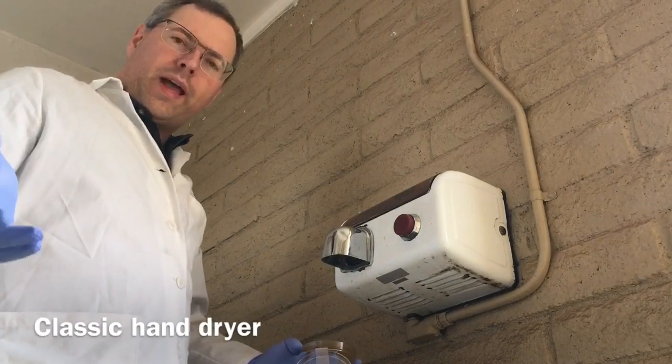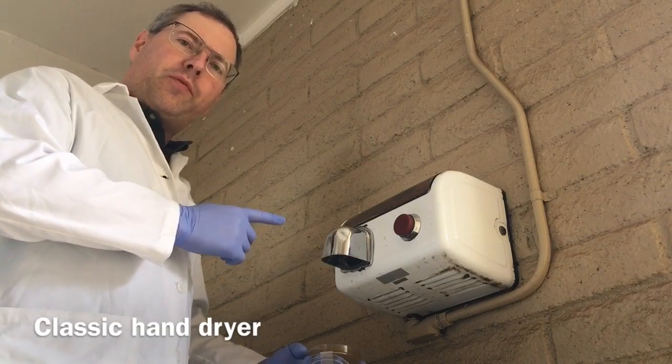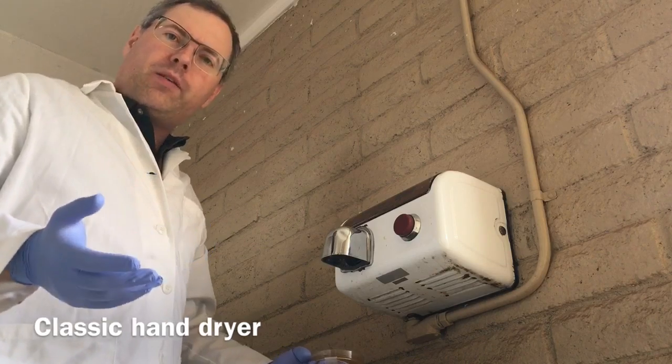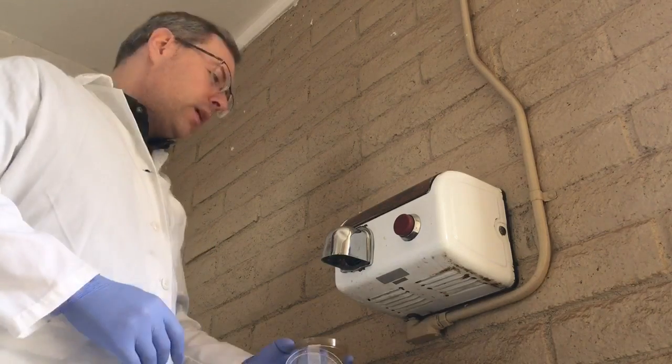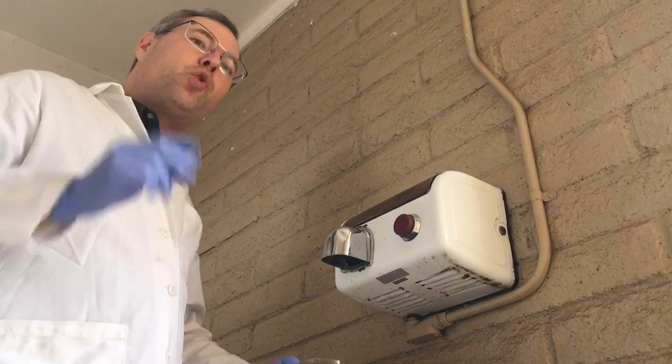Now, these old-school hand dryers, they move a lot of air, about 200 cubic feet per minute. That comes out to about 5,000 liters of air within just one minute. So, you can see how it will concentrate a lot of spores in a short amount of time.